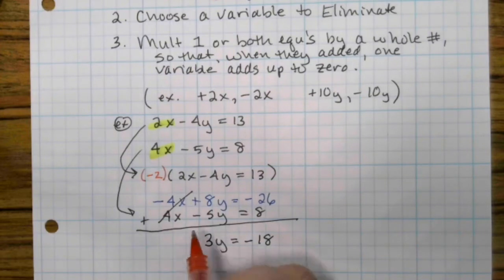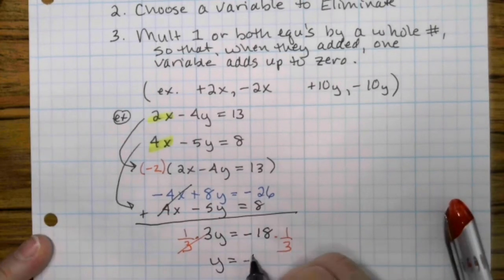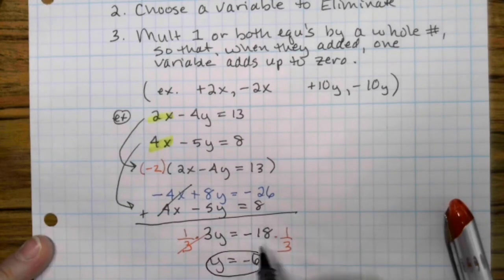Continue solving. So multiply by the reciprocal. We're going to multiply by 1 third on both sides. And y equals negative 18 over 3, which is negative 6. That is our first answer.